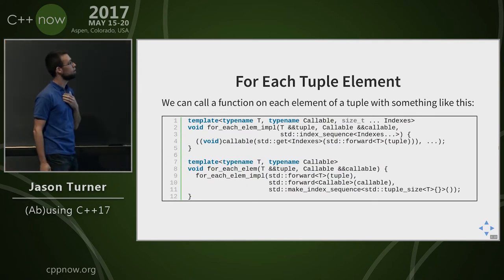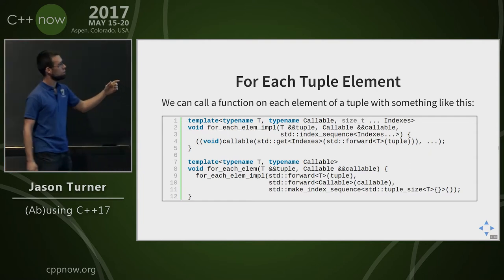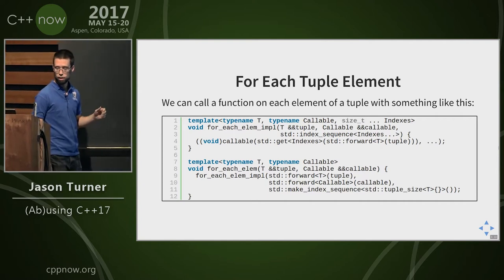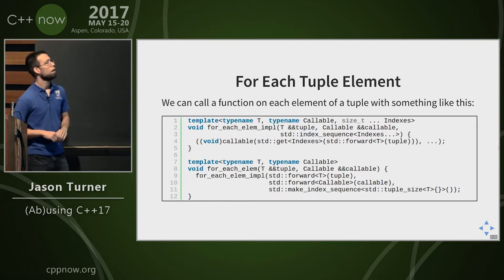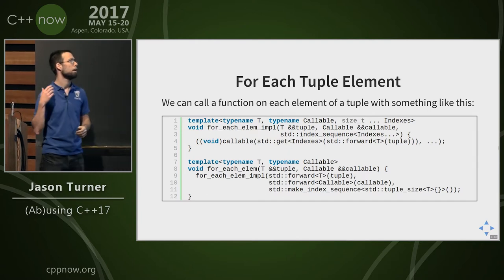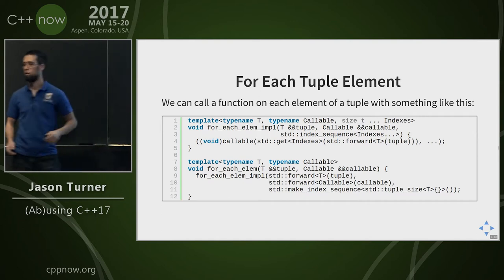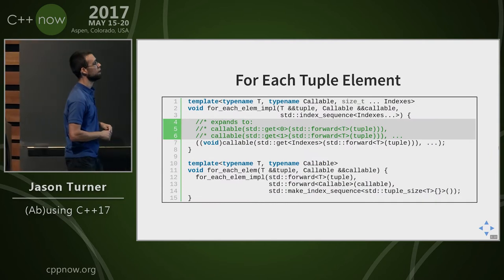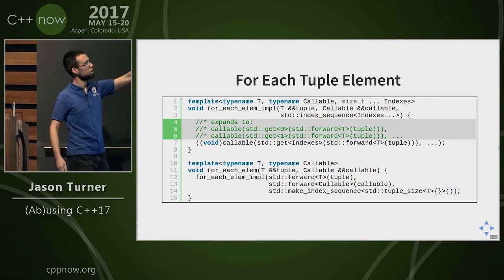So I expanded this into a forEachElement idea. On line 8, that's our forEachElement function — we take a tuple and a callable and pass it to forEachElement impl. In there we're using index_sequence to get all the indices of the tuple elements and invoking our callable on each one of them. Basically we're just expanding this into a call to the callable for each element of the tuple.